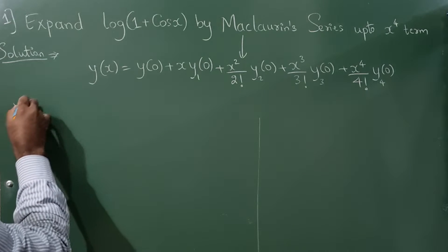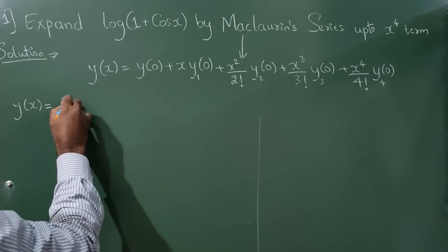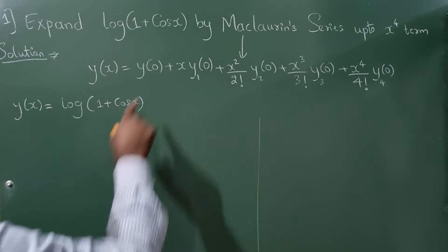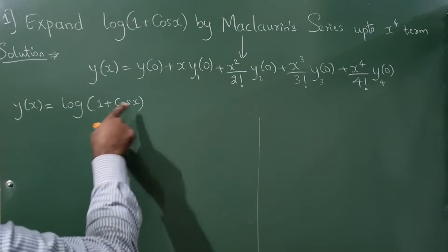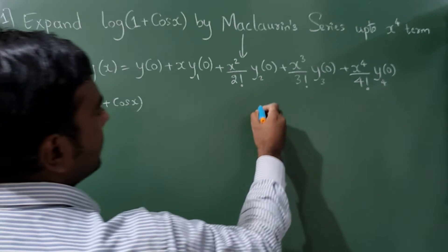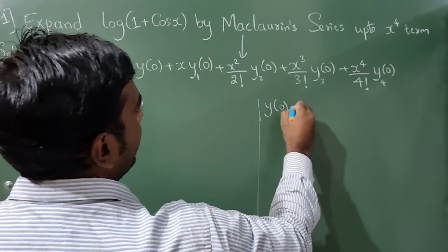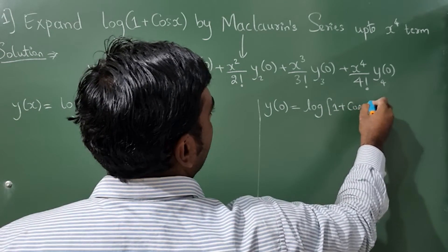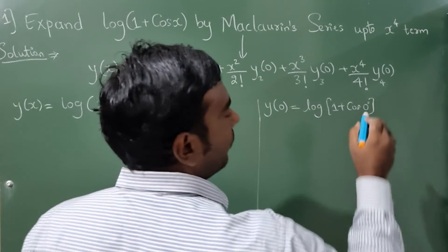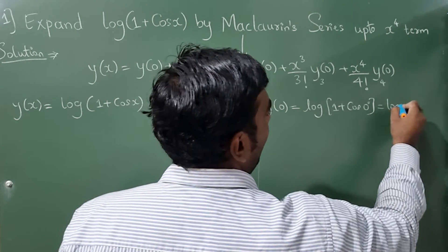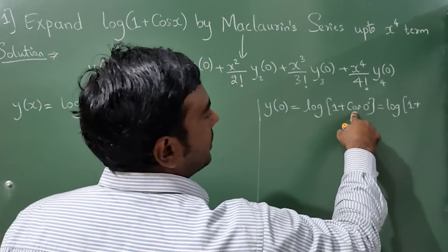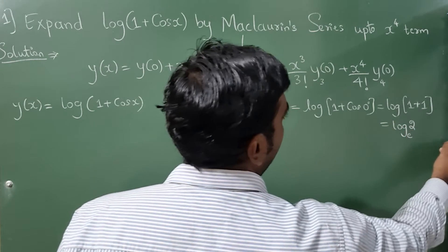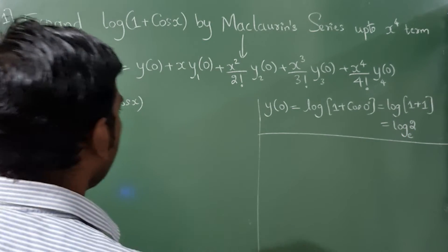Let y(x) = log(1 + cos x). To find y(0), substitute x = 0: y(0) = log(1 + cos 0). Since cos 0 = 1, we get log(1 + 1) = log 2, so y(0) = log 2 (base e).